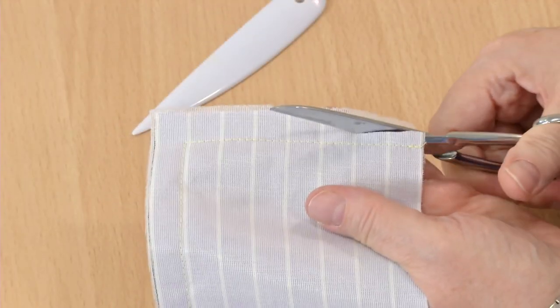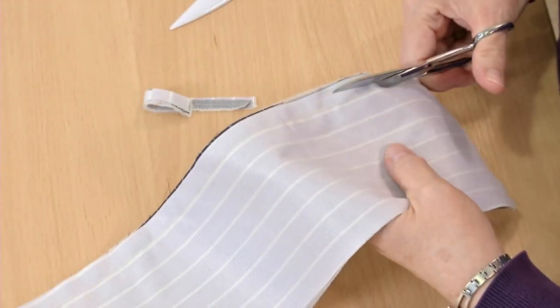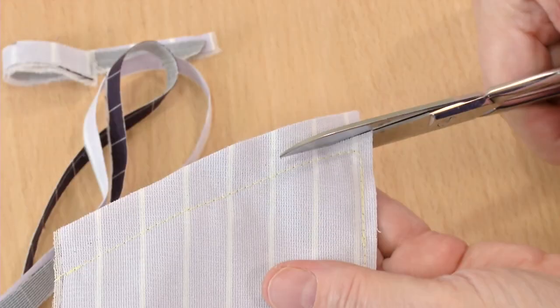First, trim and clip the seam allowances. Trim the seam allowances to one quarter inch or three eighths inch wide.